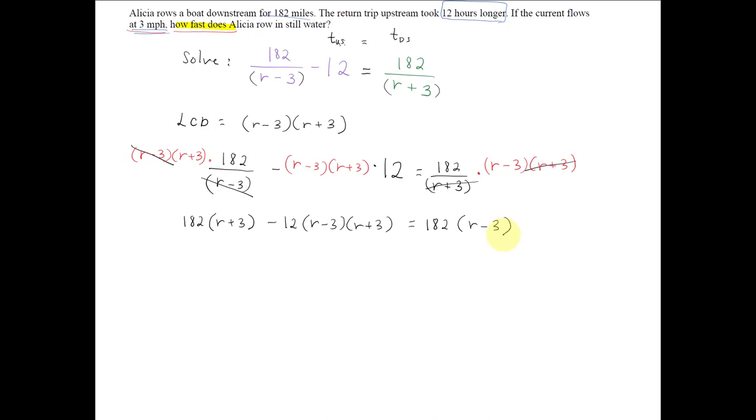This is an equation with one variable, so we'll distribute, combine like terms, and then solve for the rate. So the first distribution, I'll get 182 times r plus 182 times 3, which is 546, minus 12 times, and notice if I FOIL this out, this means a difference of squares.